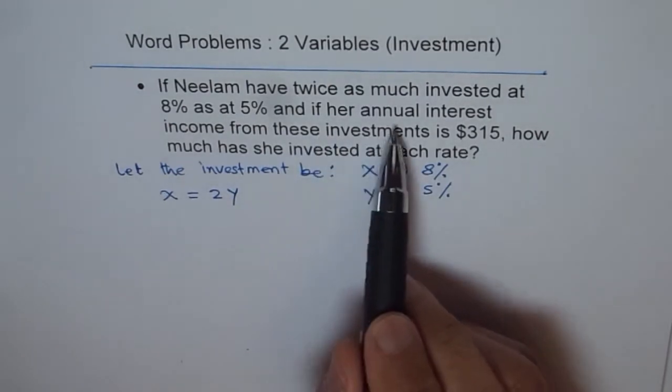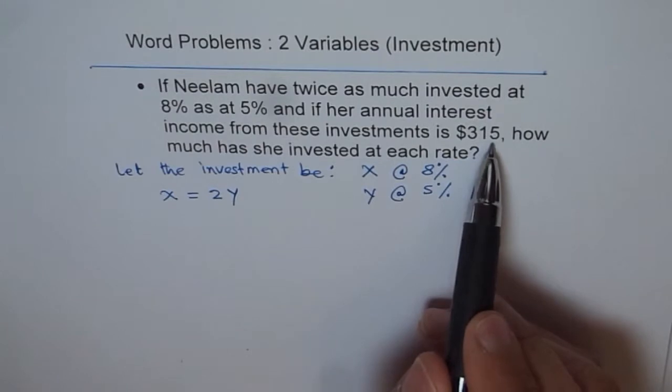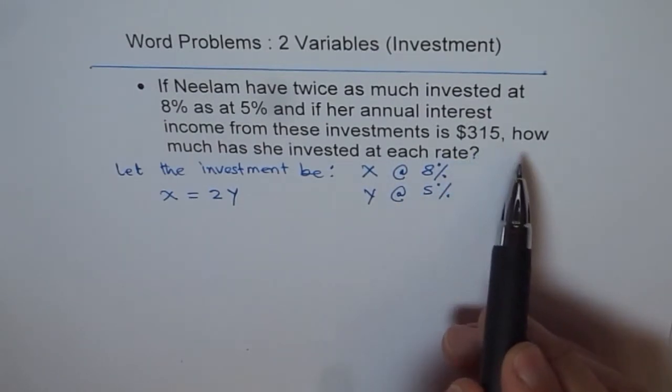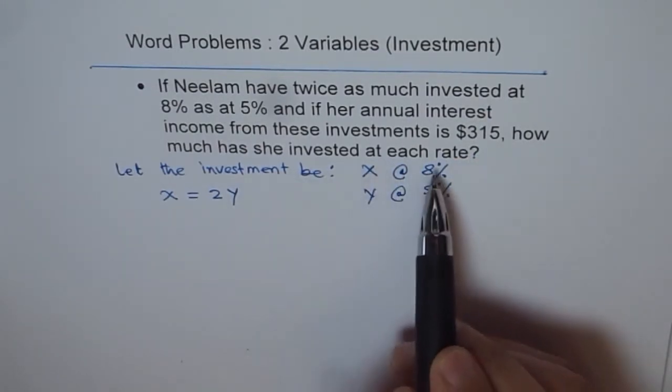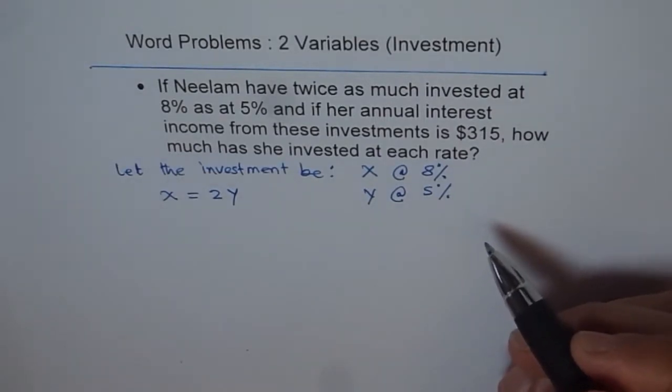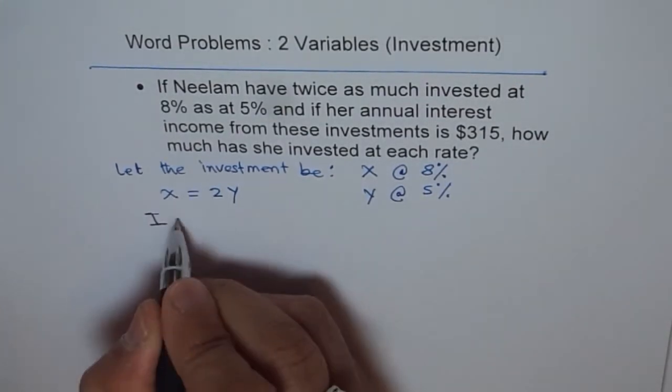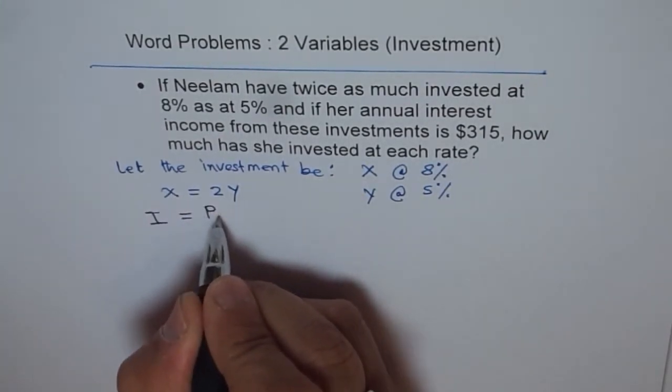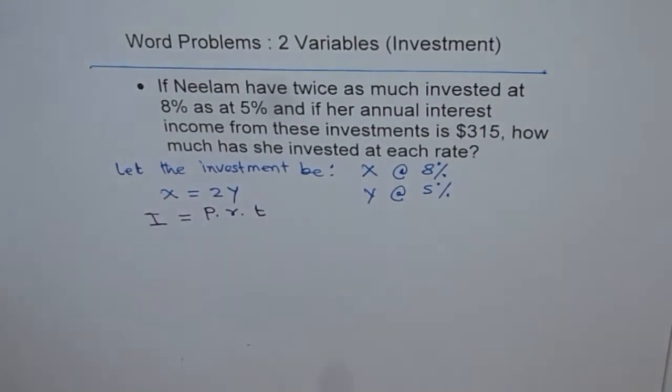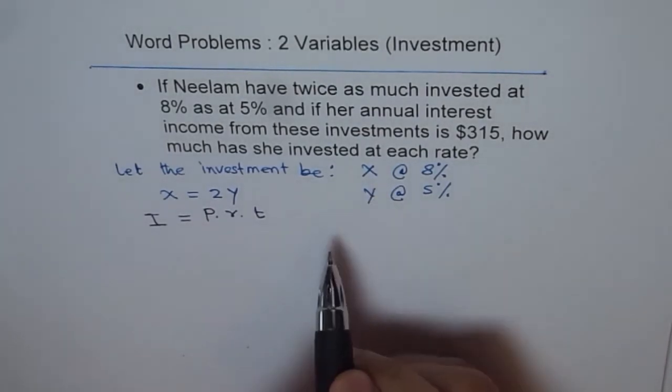If her annual interest income from these investments is 315, how much has she invested at each rate? Now, relation between income and amount invested is what? It is interest is the return from investment which is amount invested P times R times T. That is the formula. Interest is the income. This is the income from what you invest.